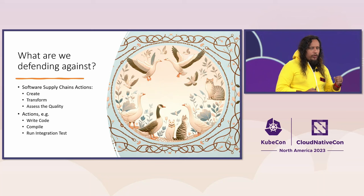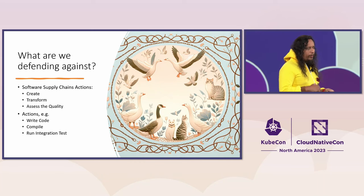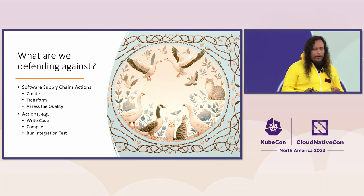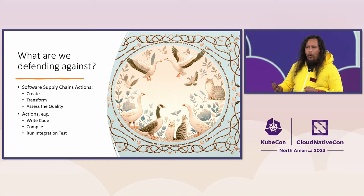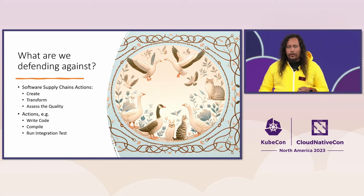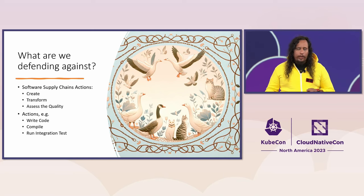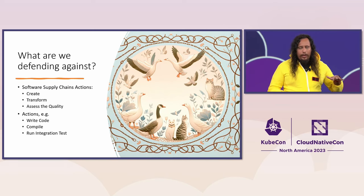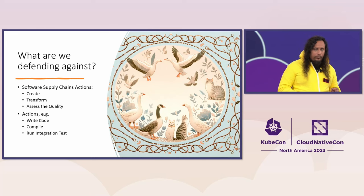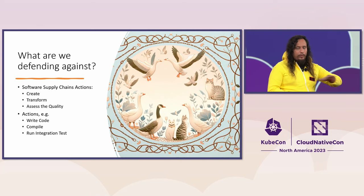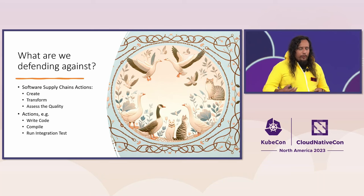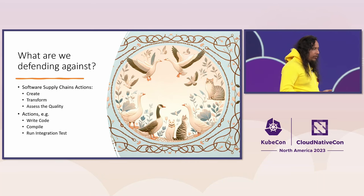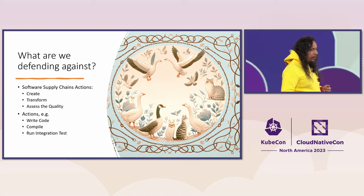Generally, you see something will perform some creation of an artifact, transform one thing to another, or assess the quality of that thing and report on it — creating an attestation of quality. There are various actions that fit into those three categories, and it's not like you can pigeonhole something into just one at a time. Things like writing code, compiling, running an integration test, doing a code review — these are all actions that you can perform.